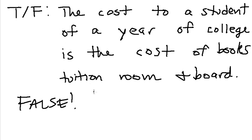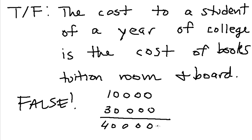So, if that happened to be ten thousand dollars, and the cost of books, tuition, room, and board was thirty thousand dollars, the opportunity cost would be forty thousand dollars, because the opportunity cost includes both the cost of books, tuition, room, and board, and the cost of not having your next best option.